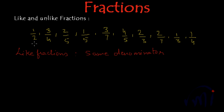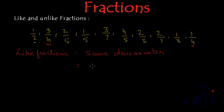In the first fraction we have 2 as the denominator. Do we have any other fraction with 2 as the denominator? No. So let's look at the second fraction — it has 4 as the denominator. And here we have one more fraction with 4. So we have got one group of like fractions: 3 by 4 and 1 by 4.